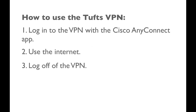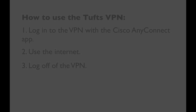Using the Tufts VPN is simple. All you have to do is log in using the Cisco AnyConnect application on your computer or mobile device. You can then use the internet just like you are on campus, with the confidence of knowing that your data is safe. When you're done, disconnect from the VPN. It's that easy.